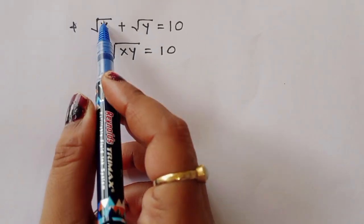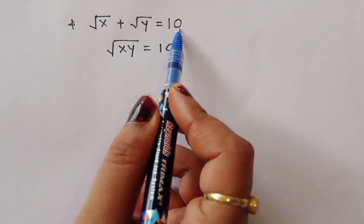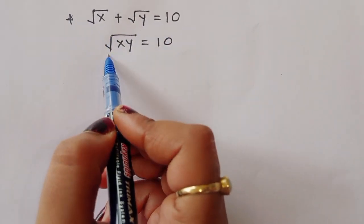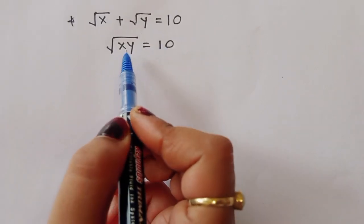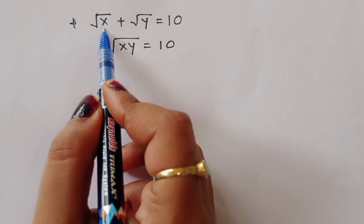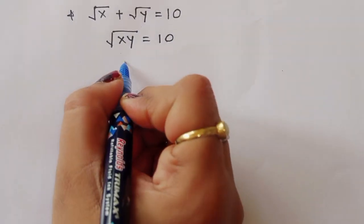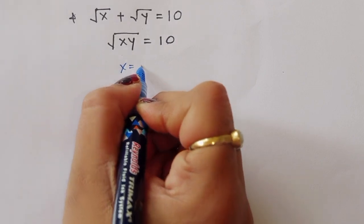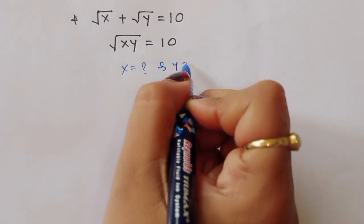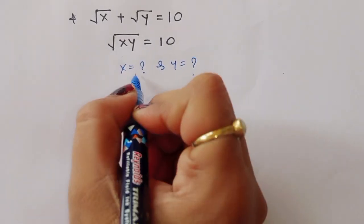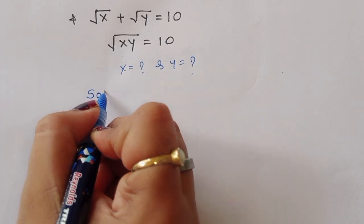The question is given: square root of x plus square root of y is equal to 10, and square root of xy is equal to 10. We have to find out the value of x and y. Let's see the solution.